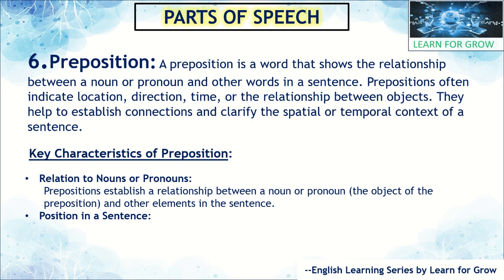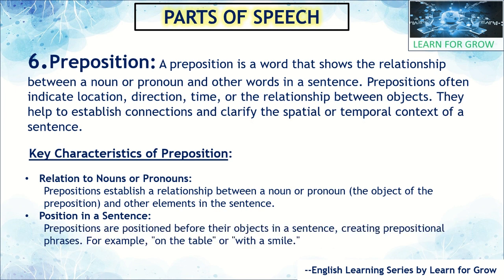The second key characteristic is position in a sentence — where we place the preposition while forming the sentence. Prepositions are positioned before their object in a sentence, creating prepositional phrases. For example, 'on the table' — 'table' is the object, and 'on' comes before it. 'With a smile' — 'smile' is the object, and 'with' is the preposition before it.